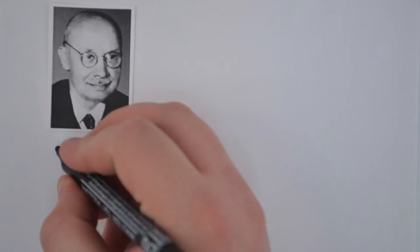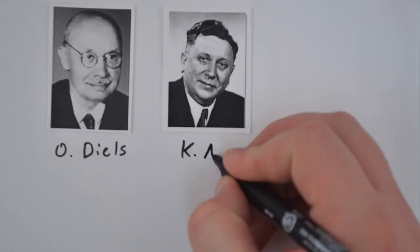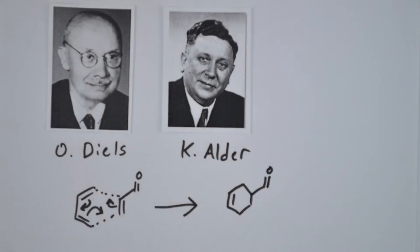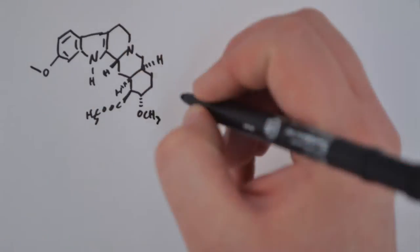This approach was first described by Otto Paul Hermann Diels and Kurt Alder in 1928. This process is not just limited to simple organic molecules. The Diels-Alder can also be applied to produce complex natural products.